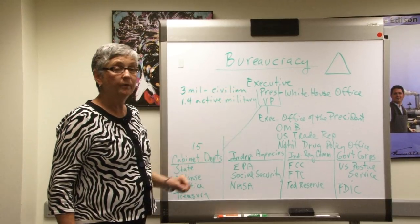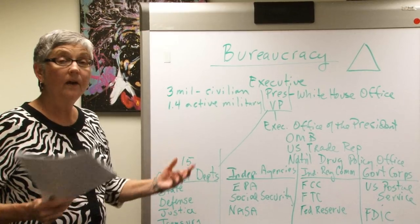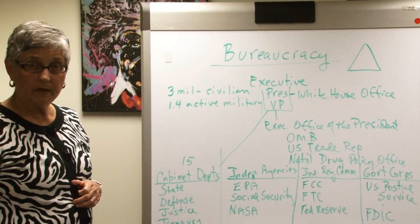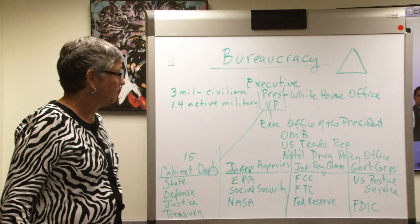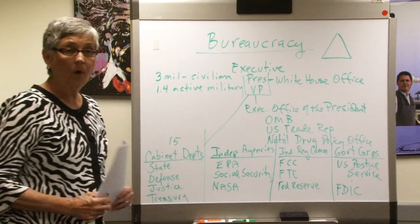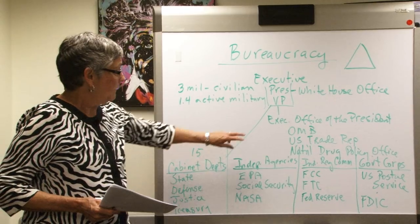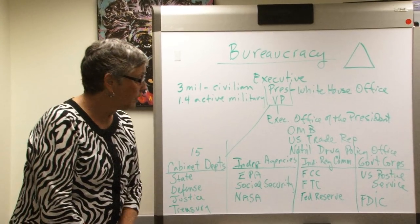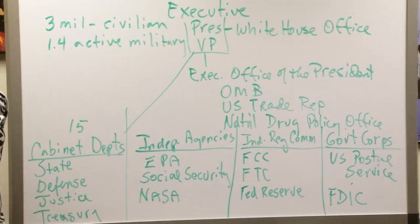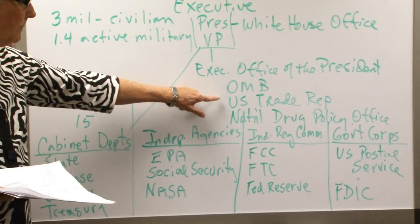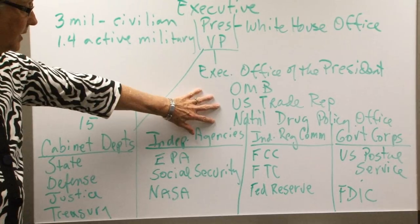Remember, Congress makes the laws but the function of the executive is to enforce or carry out the laws. Certainly one person can't do that, so you have this huge bureaucracy to help the president. You have the president, the vice president, and then a White House Office very close to the president — the personal aides that keep things going every day. Then there's the Executive Office of the President, which contains organizations like the Office of Management and Budget, the US Trade Representative's Office, and the National Drug Policy Office.